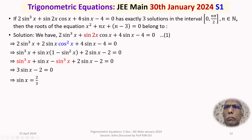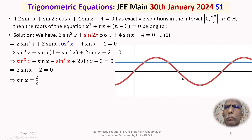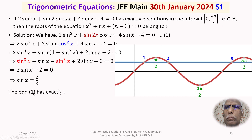The equation is equivalent to sinx = 2/3. Drawing the sine curve and the horizontal line sinx = 2/3, this line intersects the curve once in (0, π/2), a second time in (π/2, π), and a third time in (2π, 5π/2). So there are exactly 3 solutions in [0, 5π/2], giving the least n = 5.